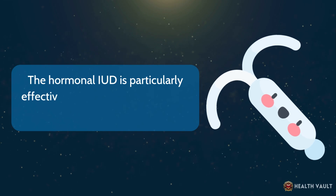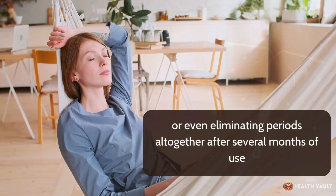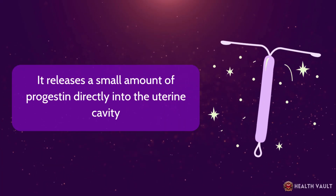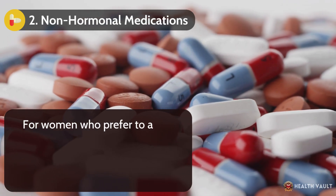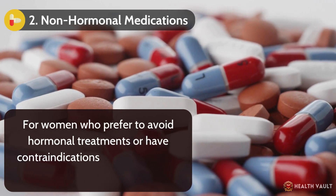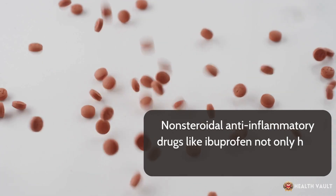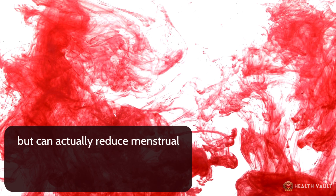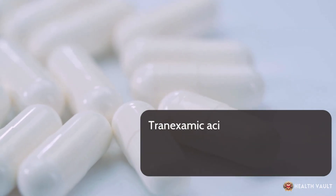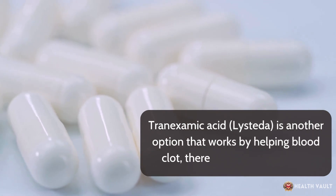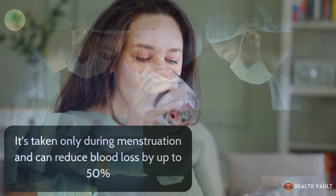The hormonal IUD is particularly effective, often reducing menstrual flow by 90% or even eliminating periods altogether after several months of use. It releases a small amount of progestin directly into the uterine cavity, thinning the endometrium while having minimal systemic effects. For women who prefer to avoid hormonal treatments, non-hormonal options exist. NSAIDs like ibuprofen not only help with pain but can reduce menstrual flow by 20-40% by affecting prostaglandins. Tranexamic acid works by helping blood clot, thereby reducing bleeding, and can reduce blood loss by up to 50%.